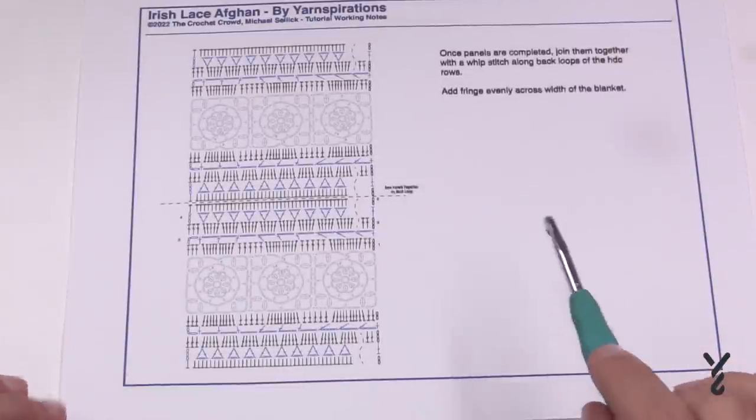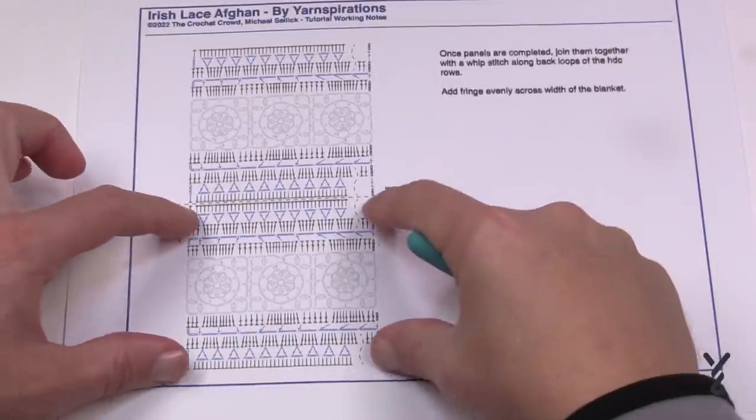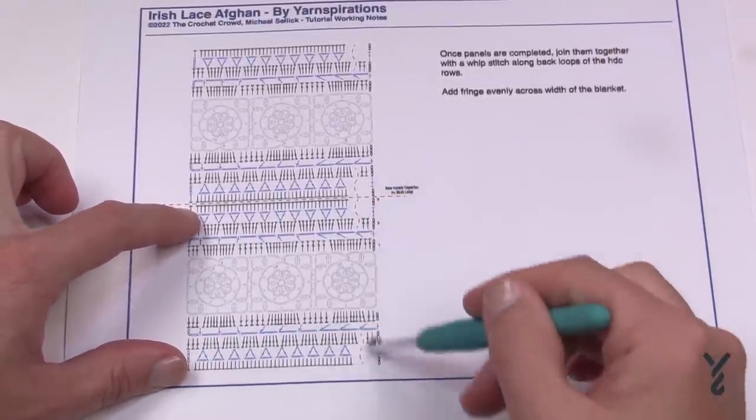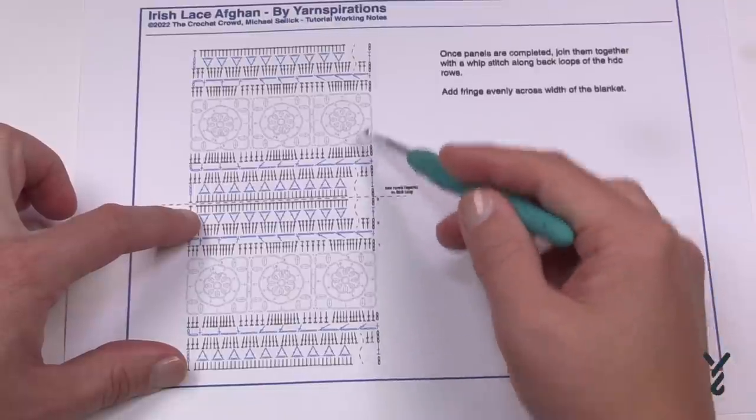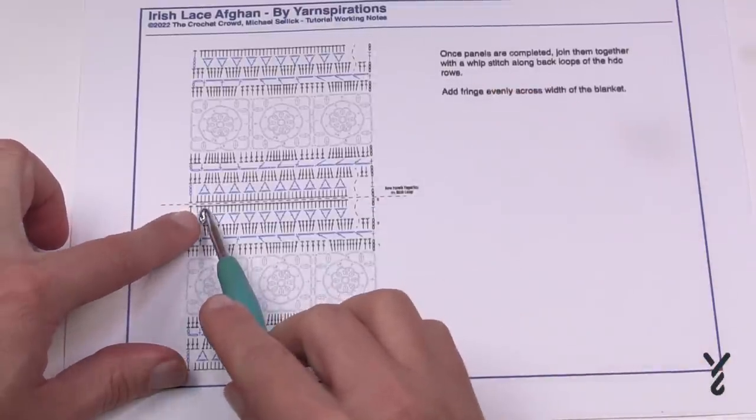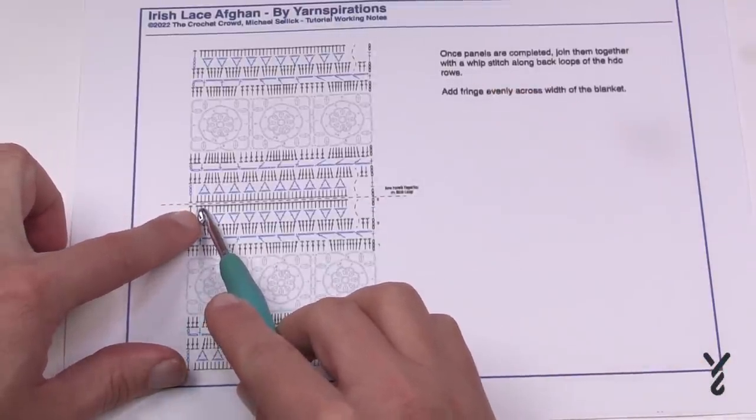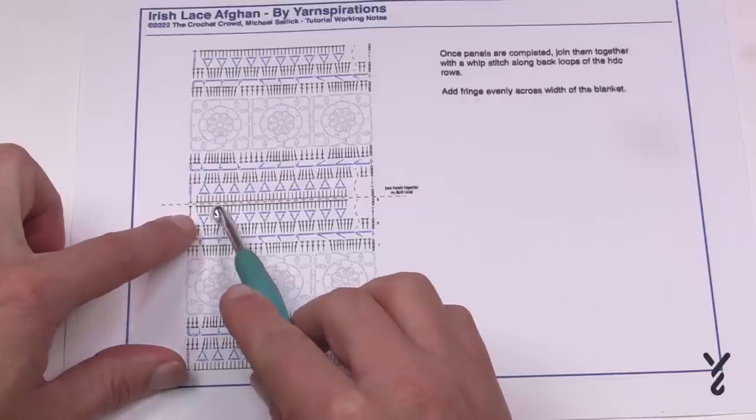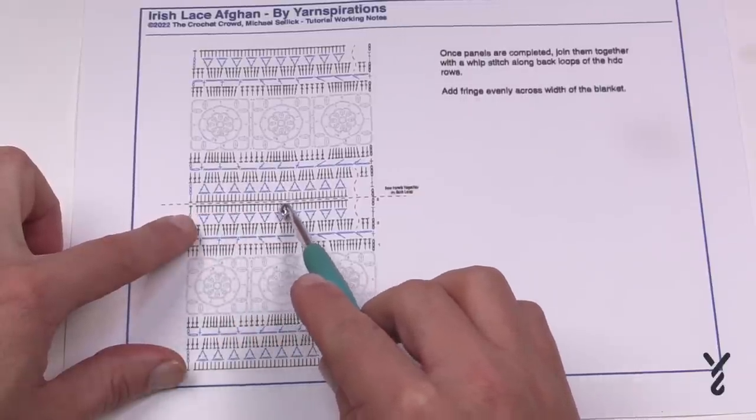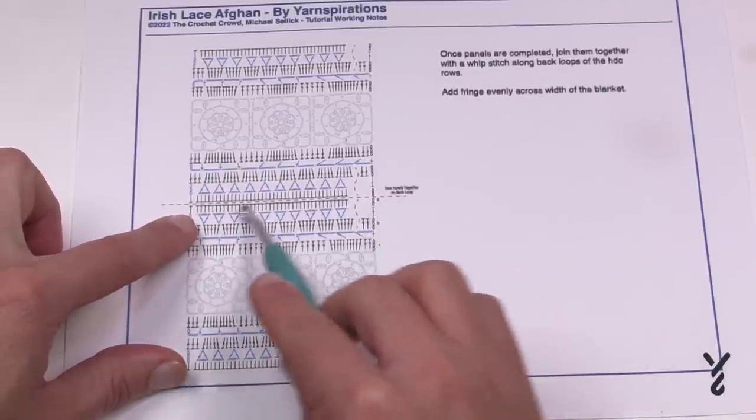So once you have your panels you have a total of seven of them. So this here is one panel, so you have the middle with it being built on both sides and then you'll have another panel. So what you're going to use is you're gonna sew using a back loop only.